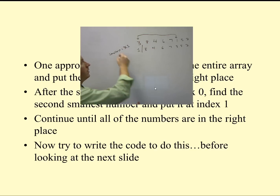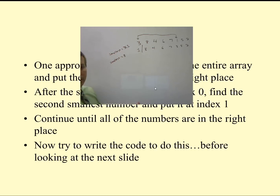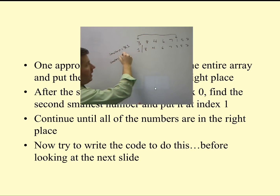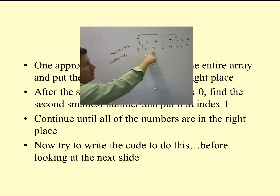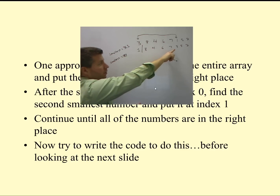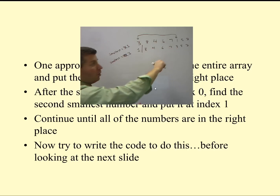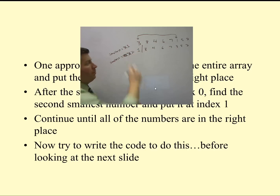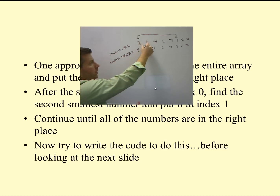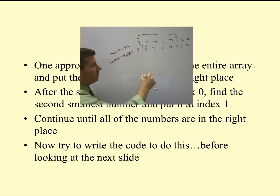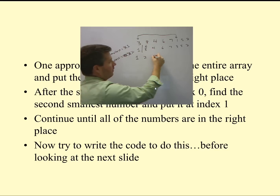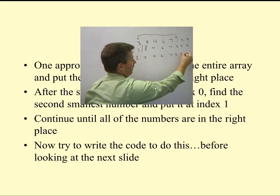We start with 8. Our next iteration through, we say the smallest number is 8. We look at 4 — 4 is smaller than 8, so 4 is now the smallest. 6 is bigger, 7 is bigger. Then 3 is smaller, so smallest becomes 3. 5 is bigger than 3. 2 is smaller, so we put 2 in our smallest. Then we swap 2, which is our smallest element, with what we had in our second spot, which was 8. So we get 1, 2, 4, 6, 7, 3, 5, 8.